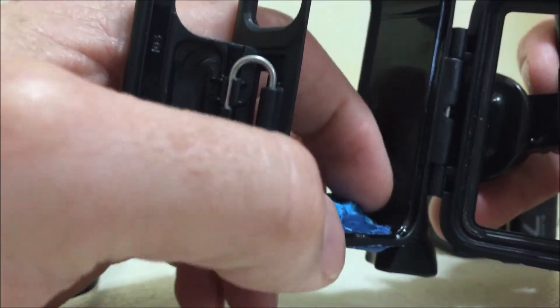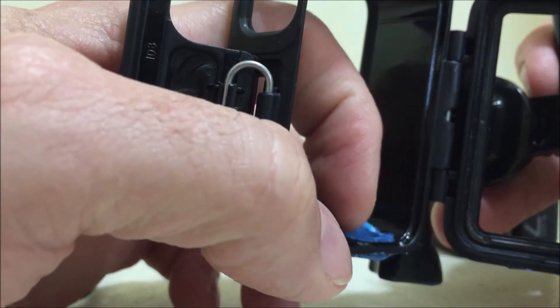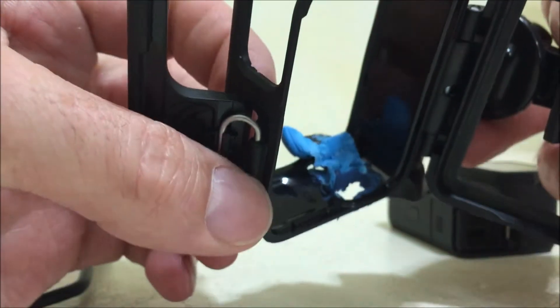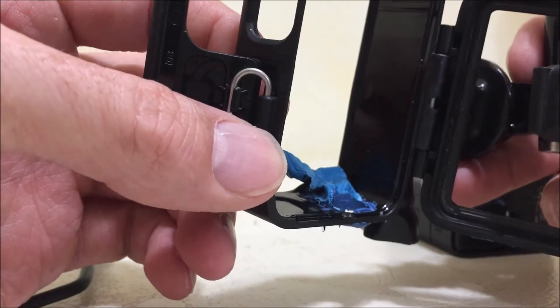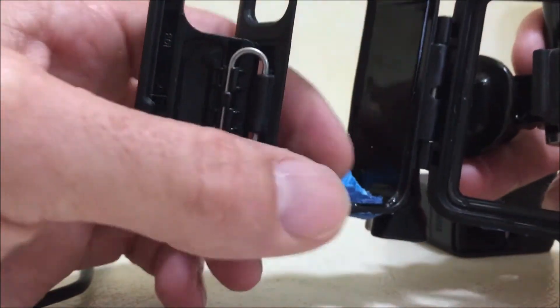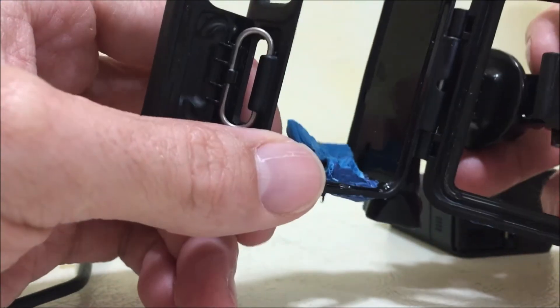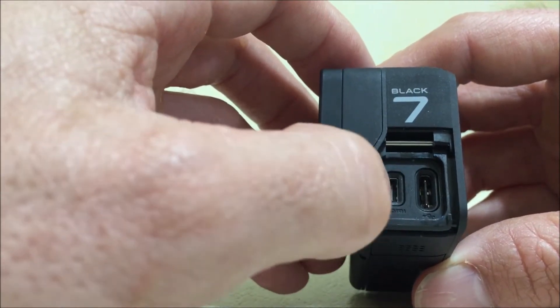You can see where the silicone has kind of oozed up into the cavity between the body and the camera itself, or the camera body and the housing for mounting. You can see this worked much better than the first time when I just put the sticky tack and silicone down.